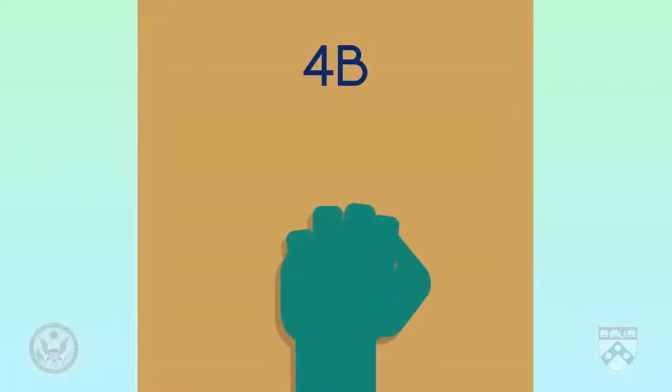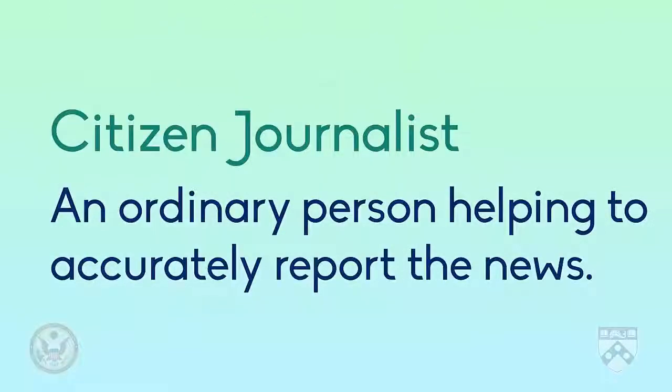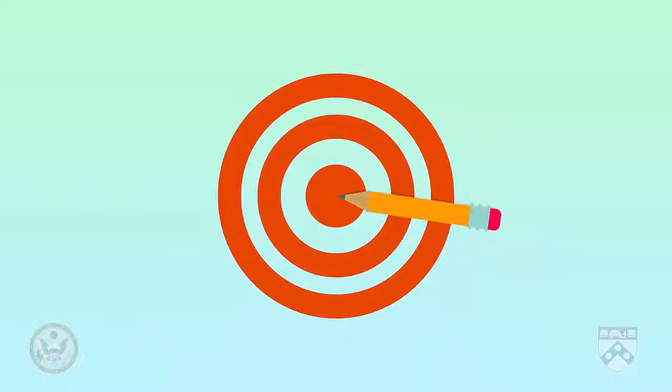However, to make sure, the journalist knocks on the doors of all the neighbours to try and find an eyewitness. Luckily, one neighbour saw the fire start and even has a video of the fire on his phone. The journalist can clearly see that the fire begins in the basement. This neighbour is a citizen journalist — an ordinary person helping to accurately report the news. So now, because she has gathered multiple perspectives, the journalist knows that she is reporting the story accurately. The story she writes will be the truth.